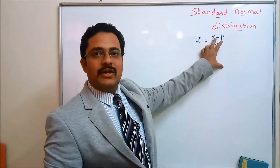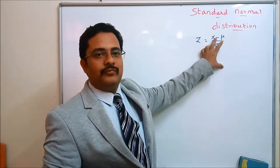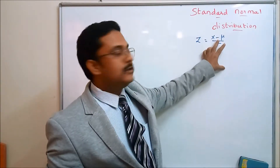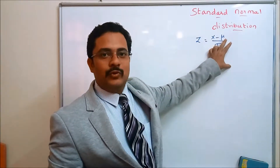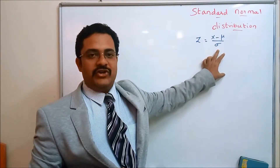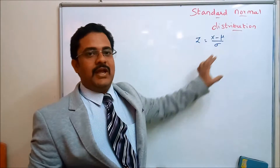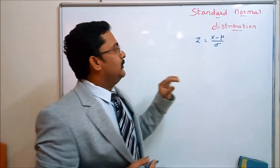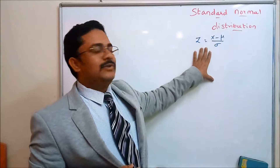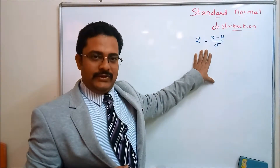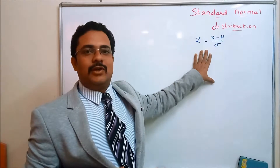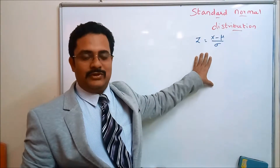X is a random variable — you will be given such a value. Sometimes you may be asked to find Mu, the average, and Sigma is the standard deviation. By utilizing this rule, we are going to discuss how to find the different areas under the normal distribution, the standard normal distribution.